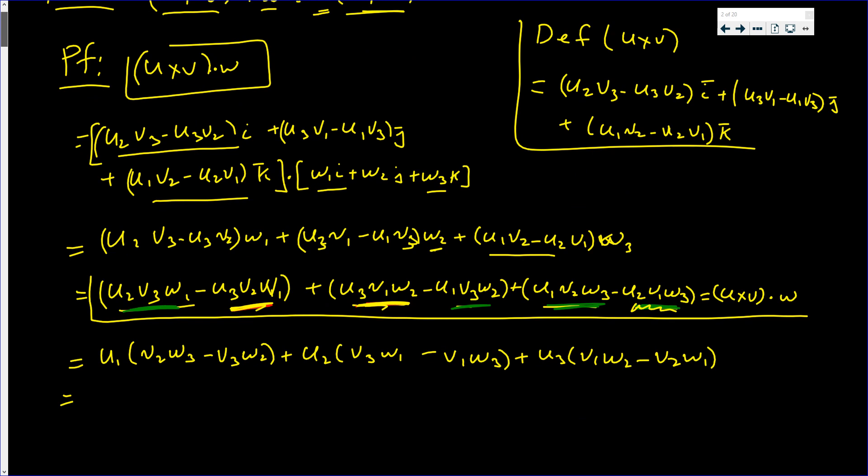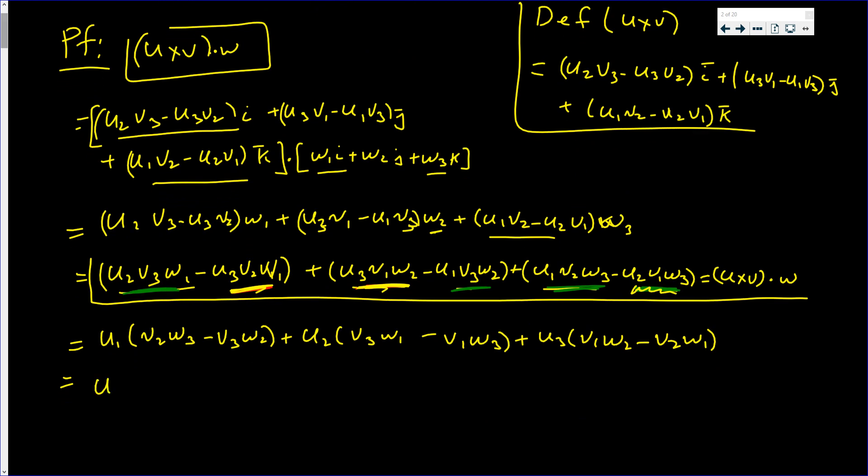Now this here is clearly u dotted with this, this, and that. v2 w3 minus v3 w2, plus v3 w1 minus